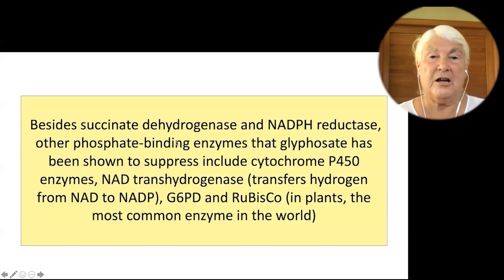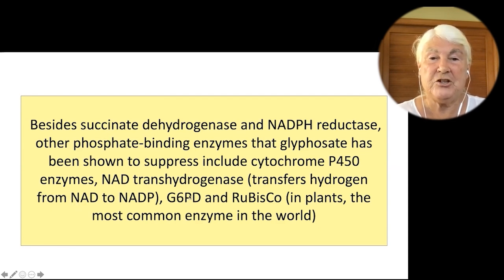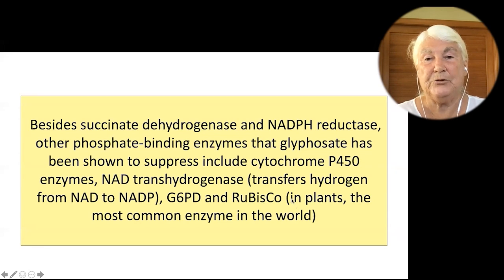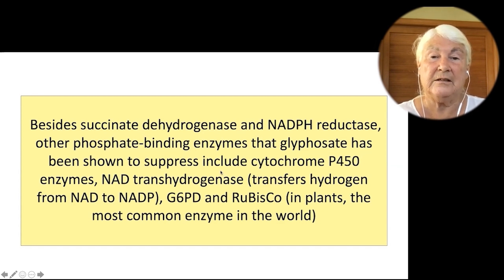In my book I discuss other enzymes suppressed by glyphosate found in the research literature: succinate dehydrogenase, NADPH reductase, cytochrome P450 enzymes, NAD transhydrogenase (which transfers hydrogen from NAD to NADP), G6PD (glucose-6-phosphate dehydrogenase), and rubisco. Rubisco also binds phosphate and is the most common enzyme in the world — plants use it in photosynthesis to pull carbon dioxide out of the air to make organic matter. I suspect glyphosate suppression of rubisco could be hurting the carbon footprint and playing a role in climate change.